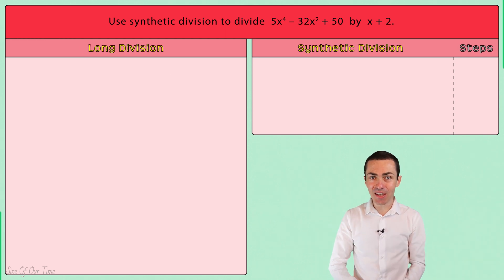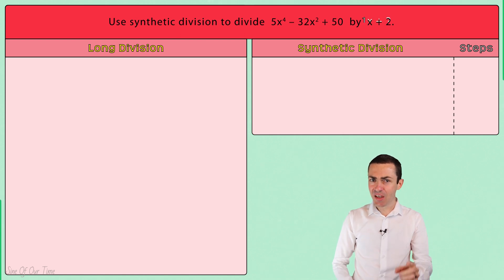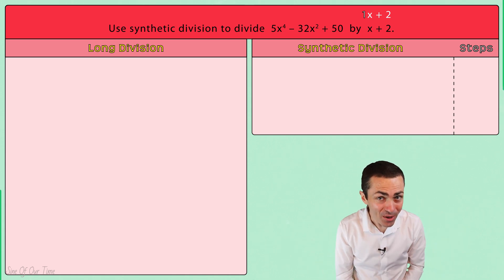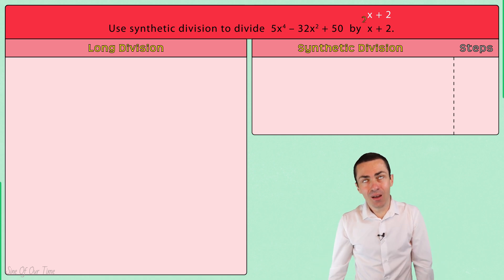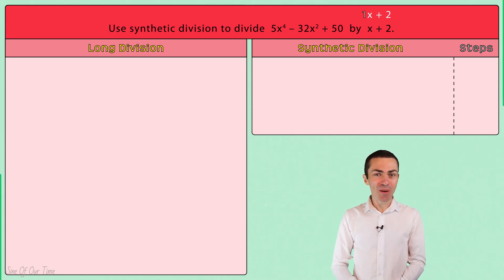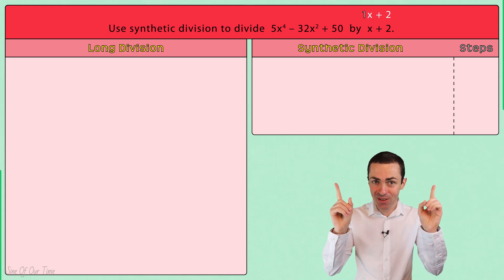We start by noting that the divisor is of the form X minus B, meaning that the coefficient of X is 1. This is important in order for synthetic division to work. If the coefficient of X is not equal to 1, it becomes a whole lot more complicated, but more about that in the next video in the series.